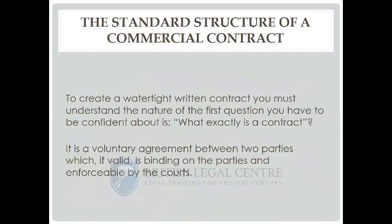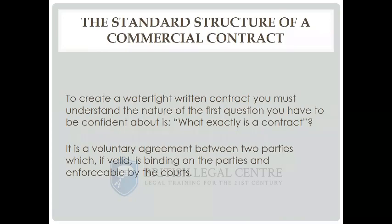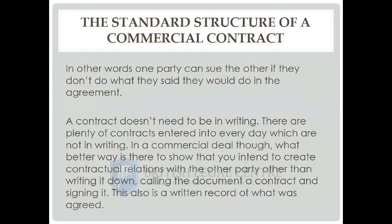To create a watertight contract - one which people cannot escape from - you have to understand the nature of the agreement. The first question you must be confident about is: what exactly is a contract? In the common law, it is a voluntary agreement between two parties which, if valid, is binding on the two parties and enforceable through the courts. That's what we mean by binding - you can't escape from it, and if you do, we can get the court to make you perform it or give us damages for your breach. One party can sue the other if they don't do what they said in the agreement.